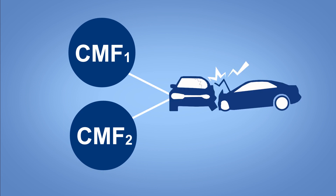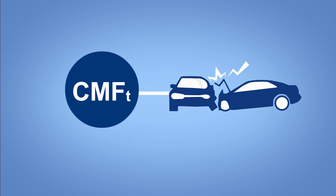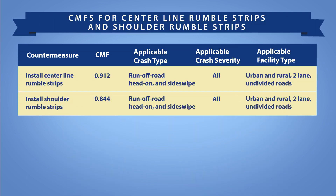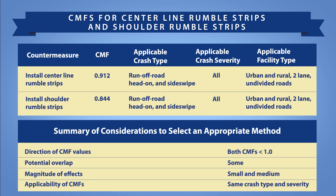When the individual CMFs apply to the same crash type and severity, the application of the results from the previous methods is relatively straightforward. Specifically, you would apply CMFt to the estimated number of applicable crashes without treatment. As an example, consider a scenario where you would like to estimate the combined effect of two countermeasures: centerline and shoulder rumble strips, selected to address head-on and run-off-the-road crashes along a rural two-lane road. Following the steps in the companion video, you determine the CMF values, potential overlap, magnitude of effects, and applicability of CMFs.